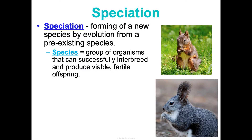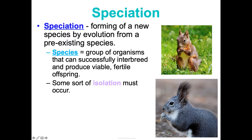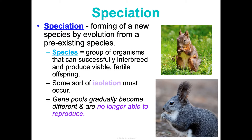In order for speciation to happen, where one species branches off from a pre-existing species and becomes its own species, there has to be some sort of isolation — a barrier that prevents this subset of the original species population from reproducing with the original population. They're isolated enough that over time, having only interbred with each other, their genes become so different from the original gene pool that they can no longer produce viable, fertile offspring.